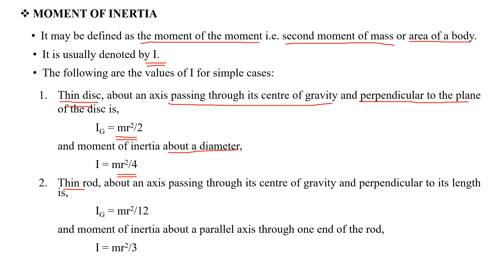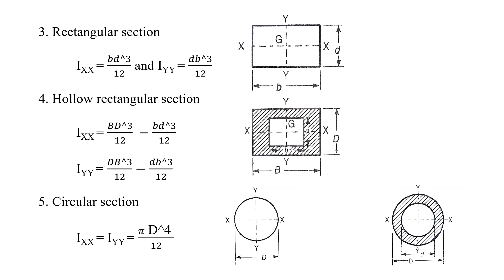For a thin rod, the moment of inertia about an axis through the centre of gravity is ml² by 12. For a thin rod with the axis at one end (parallel axis), the moment of inertia is ml² by 3. For a rectangular section, the moment of inertia is bd³ by 12.